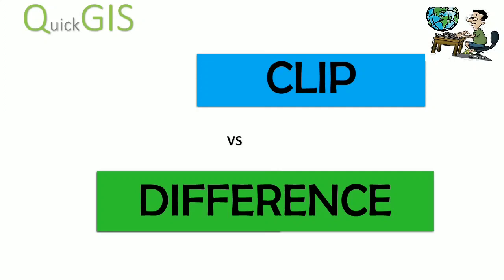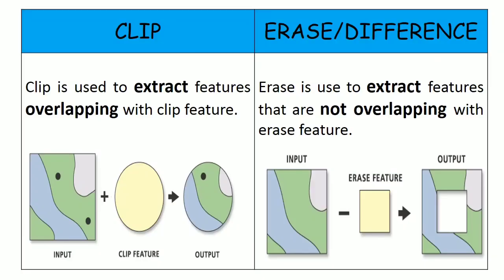Erase is also known as difference. Clip and erase are overlay tools with the similarity that they both extract information. But the difference is that clip extracts features from the input layer that are overlapping with the target layer, whereas erase extracts features from the input layer which do not overlap with the target layer. So clip is like intersection and erase is like subtraction.